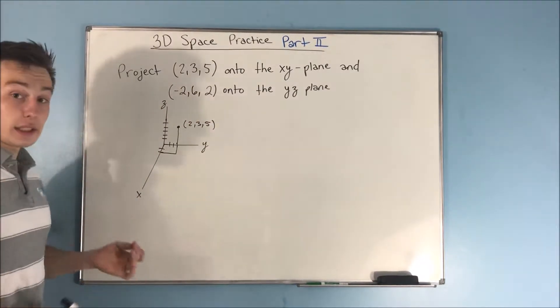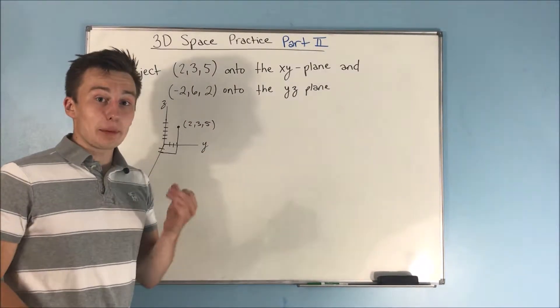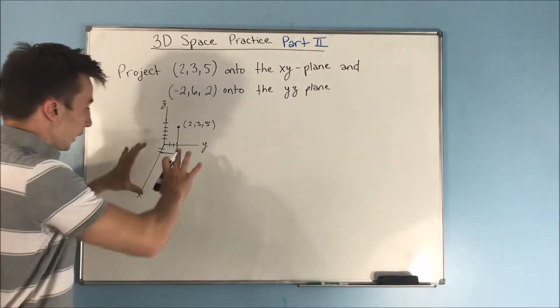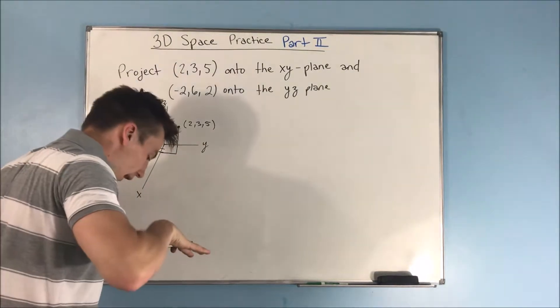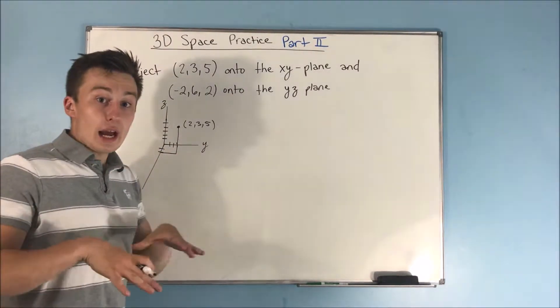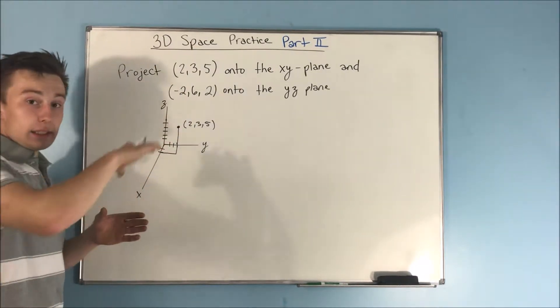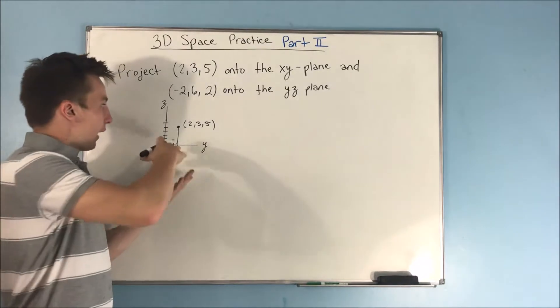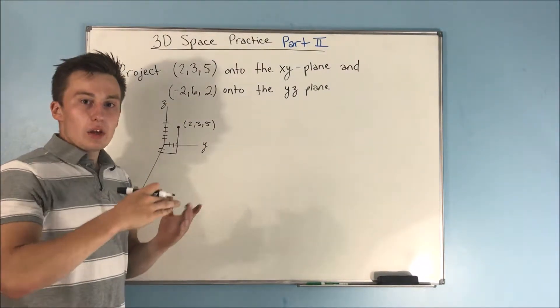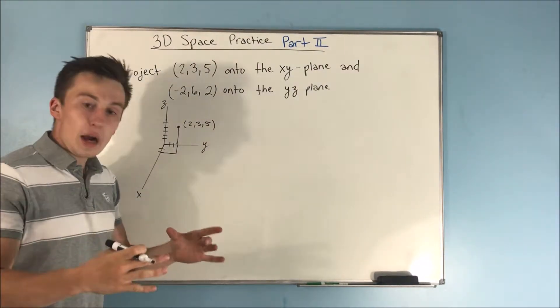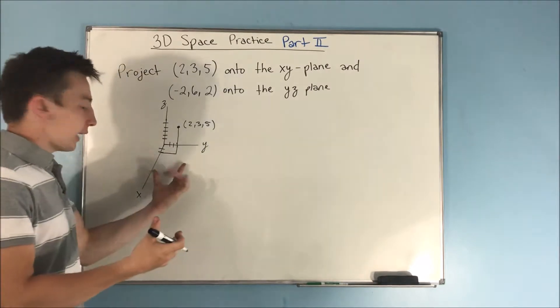Now, if we're projecting this onto the XY plane, you can kind of picture it as just looking down on the XY plane. Now you don't really see any of that Z direction. You're just kind of looking down onto a plane, right? You're looking down onto the XY plane.